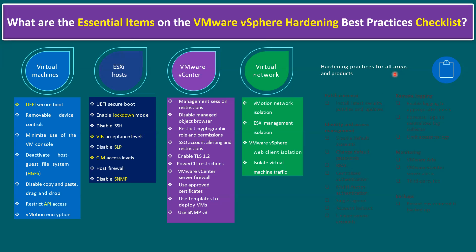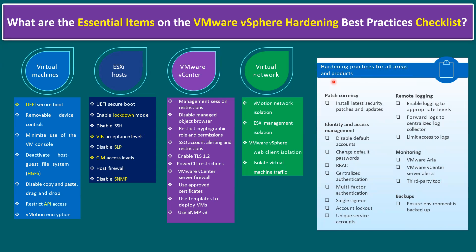Another hardening best practice applies to all areas and products within the VMware vSphere environment — applicable to the virtual machine layer, ESXi layer, vCenter, and also other guest OS and application layers as well. The common hardening practices for all areas include patch currency, identity and access management (also called ACM — access control management), remote logging, monitoring, and backups.